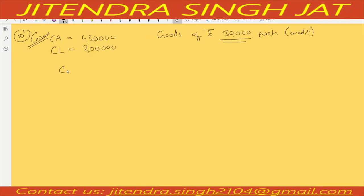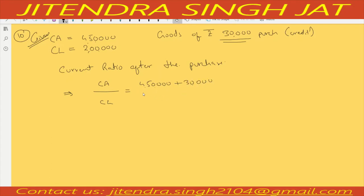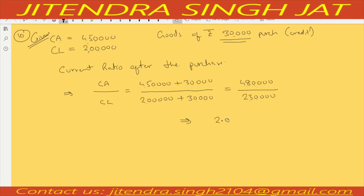Calculate current ratio after the purchase. Current assets become 4,50,000 plus 30,000 equals 4,80,000. Current liabilities also increase by 30,000: 3,50,000 plus 30,000 equals 3,80,000. Wait — current liabilities were 2,00,000 plus 30,000 equals 2,30,000. So when we compute the ratio: 4,80,000 divided by 2,30,000 equals 2.09 is to 1.